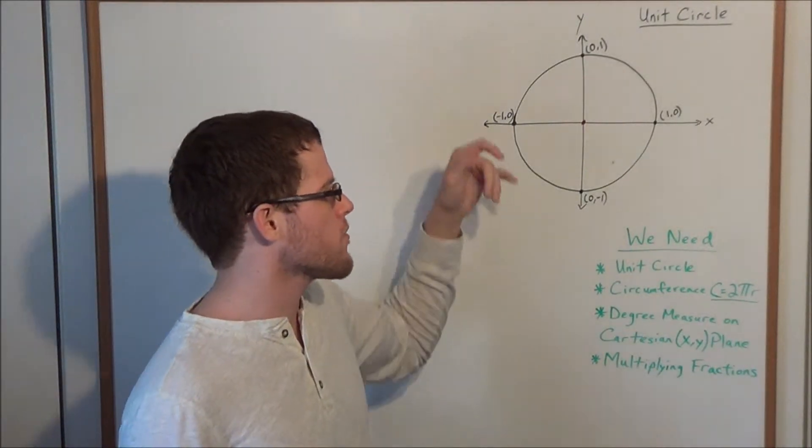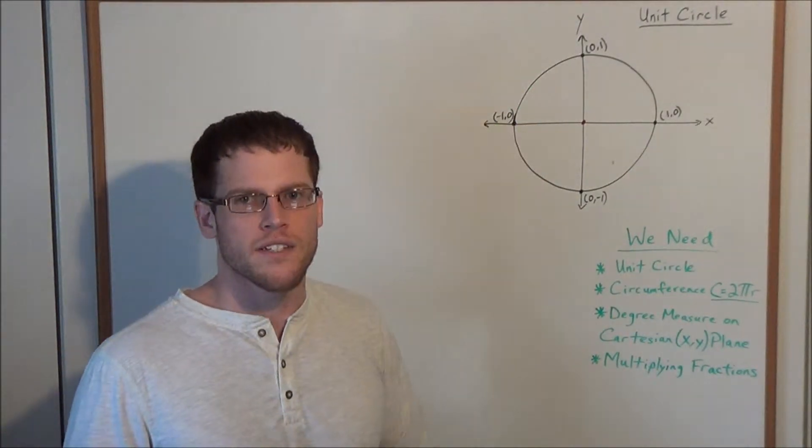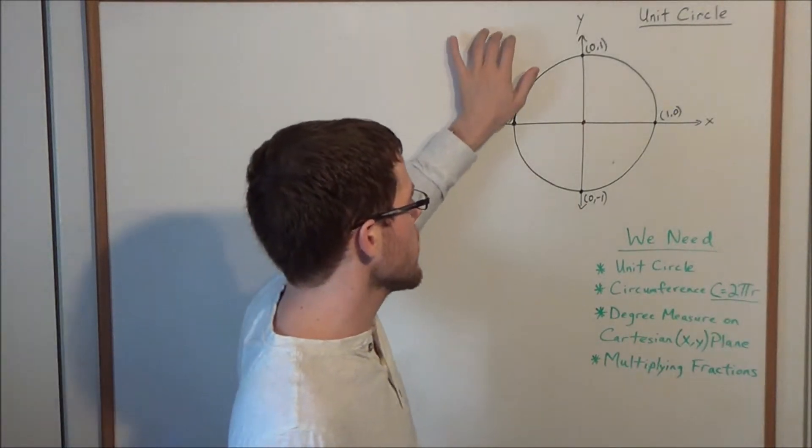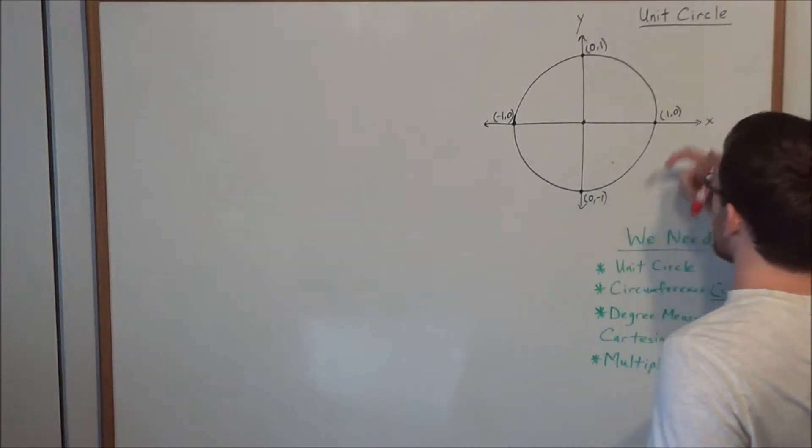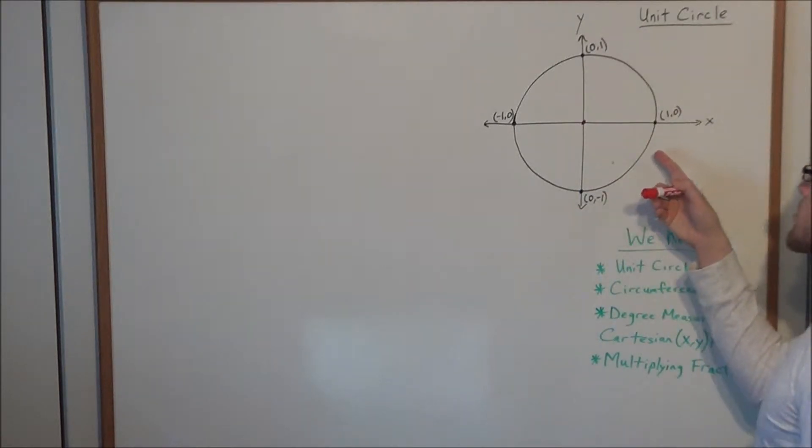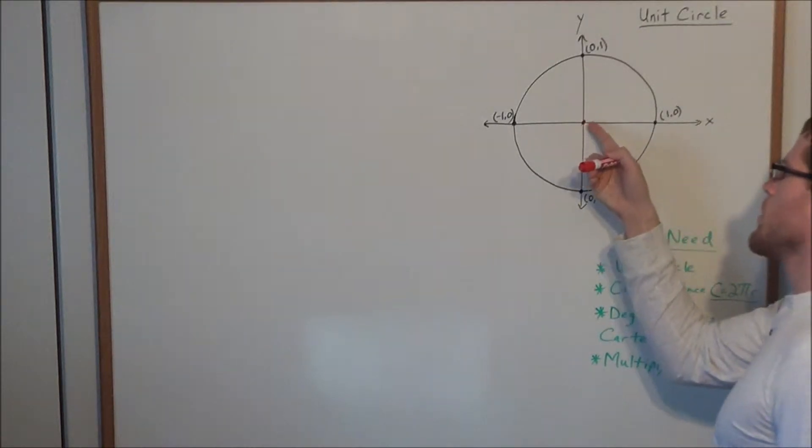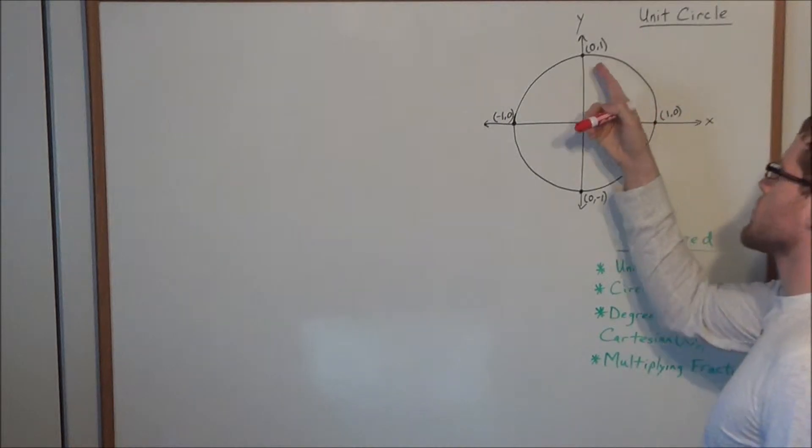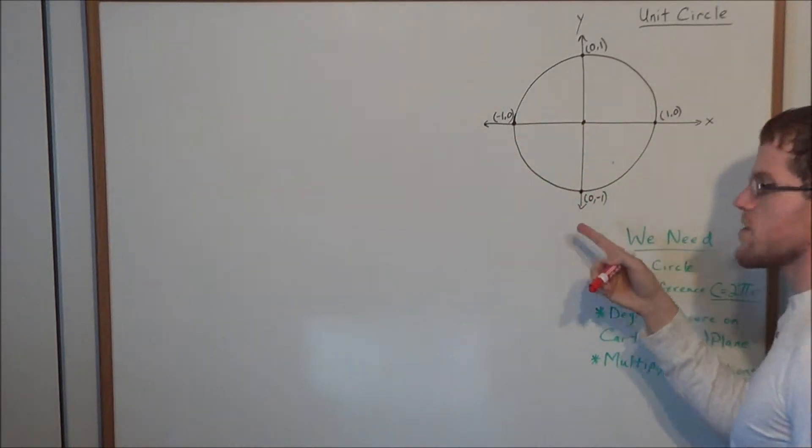Well, radians come about from the unit circle. That's how they're defined. So let's go ahead and take a look over here. We have the unit circle on the Cartesian or XY plane. I've highlighted the critical points because if we're centered at the origin, we're going to hit the point (1,0), (0,1), (-1,0), and (0,-1).